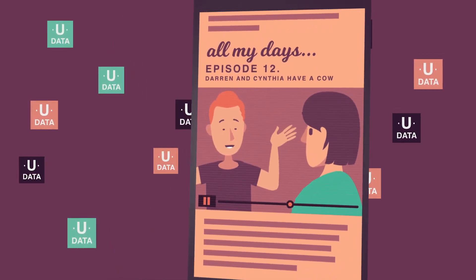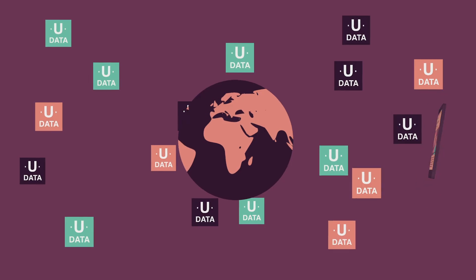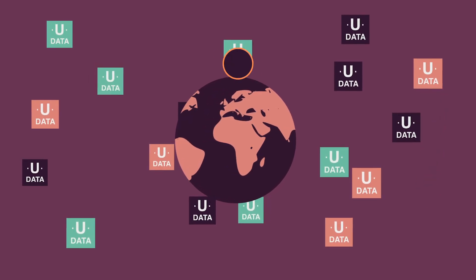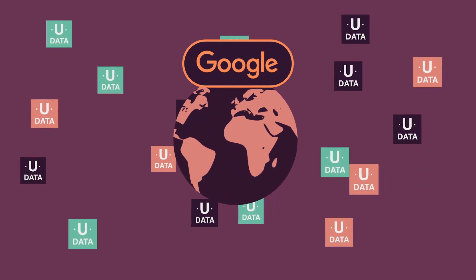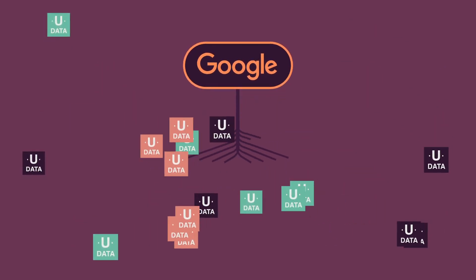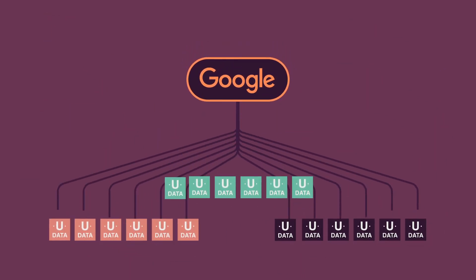In fact, the entire World Wide Web consists of unstructured data, which is what Google helps overcome by using crawlers and other tools to capture information that can be used to create somewhat similar and therefore comparable descriptions of what wildly different websites contain.